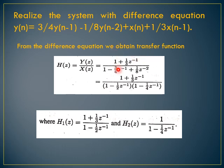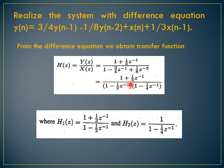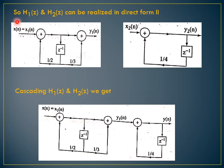We factorize the denominator to get it into single order. One combination is: H1(z) = (1 + (1/3)z⁻¹) / (1 - (1/2)z⁻¹) and H2(z) = 1 / (1 - (1/4)z⁻¹). Another possible combination is H1(z) = (1 + (1/3)z⁻¹) / (1 - (1/4)z⁻¹) and H2(z) = 1 / (1 - (1/2)z⁻¹). Keeping this as an example, we draw the structure where H1(z) and H2(z) are realized in direct form 2.